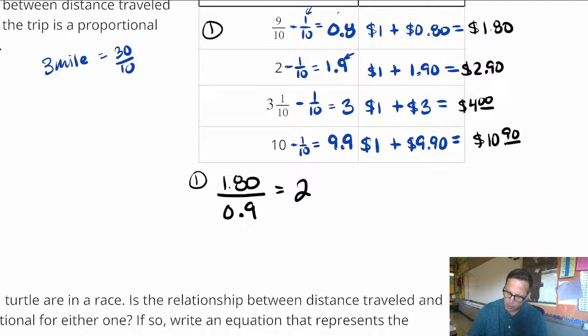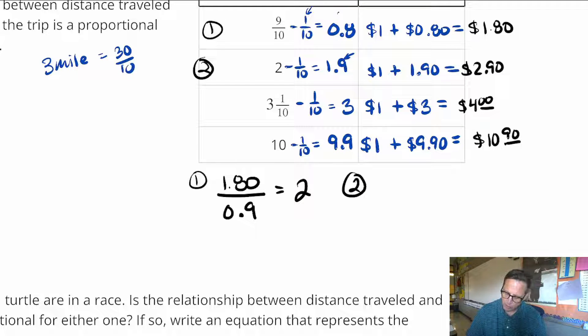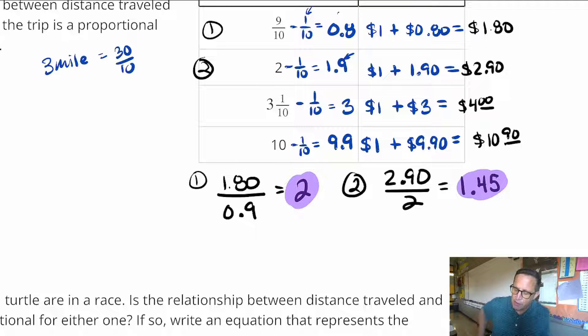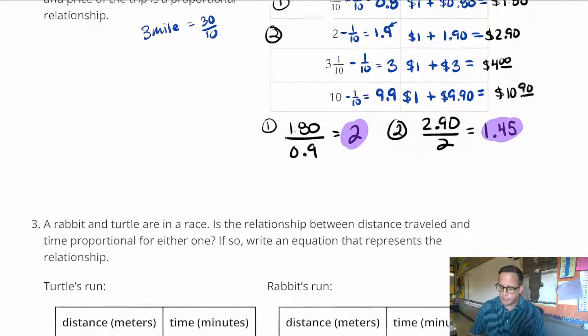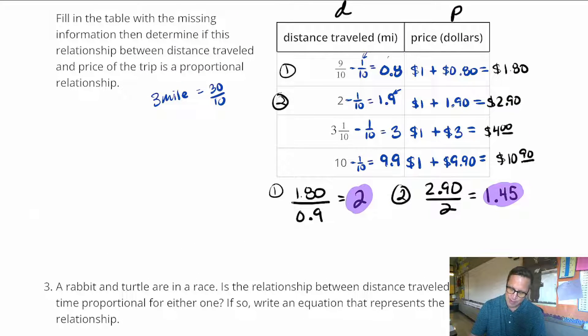Now number 2, let's do this one. I'm going to do $2.90 and divide that by 2. You already know where this is heading. You get $1.45. And we have yet to run into a proportional relationship. We have 2, and we have $1.45 there. And I'm not going to go any further because we're getting different constants of proportionality. Well, it's not a constant of proportionality. We're not getting the same number. So this is not proportional.